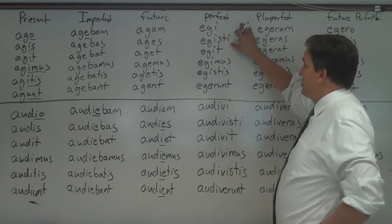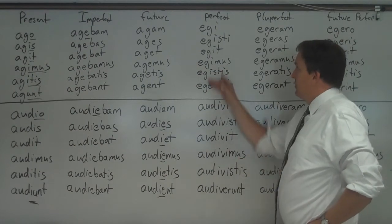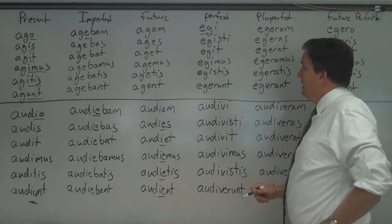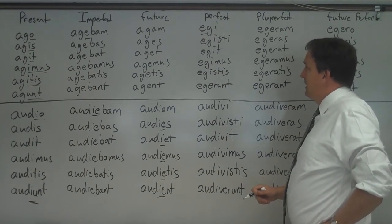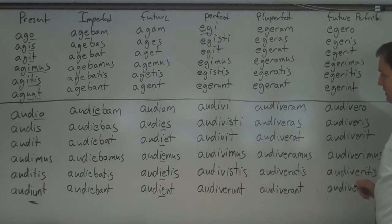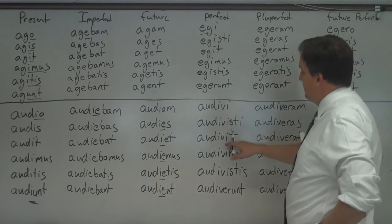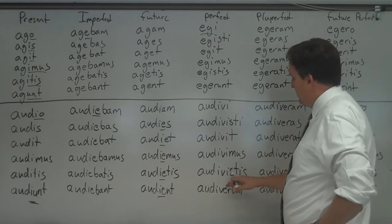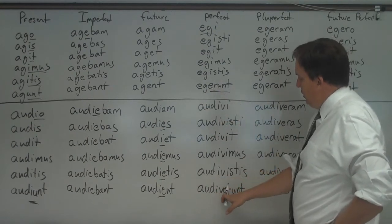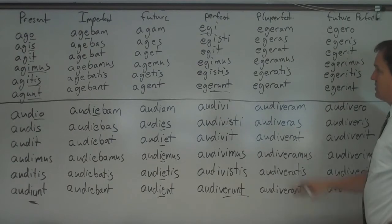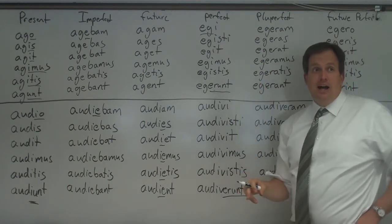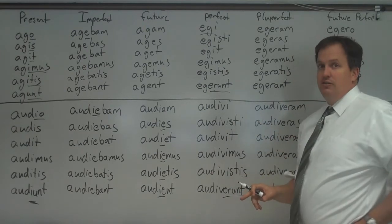The perfect is formed the same way as the first or second conjugation. You take the third principal part. For ago, agere, the third principal part is egi — so: egi, egisti, egit, egimus, egistis, egerunt. For audio, the third principal part is audivi — so: audivi, audivisti, audivit, audivimus, audivistis, audiverunt — no I after the V there. The perfect is translated two ways: I drove and I have driven; I heard and I have heard.